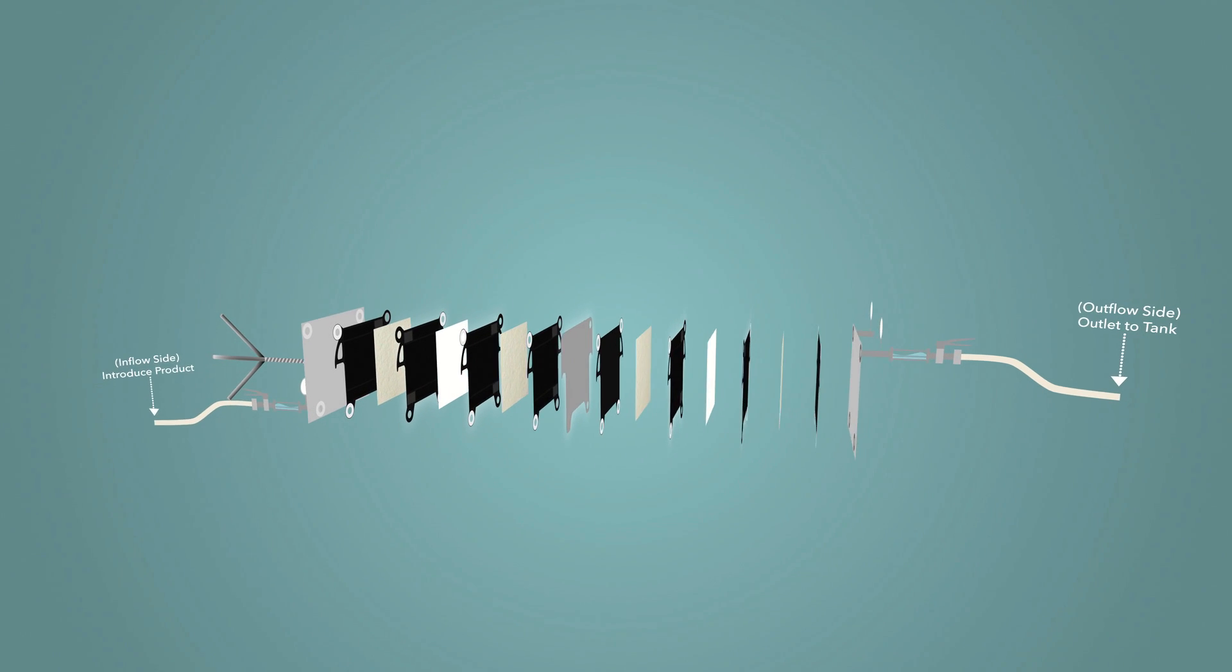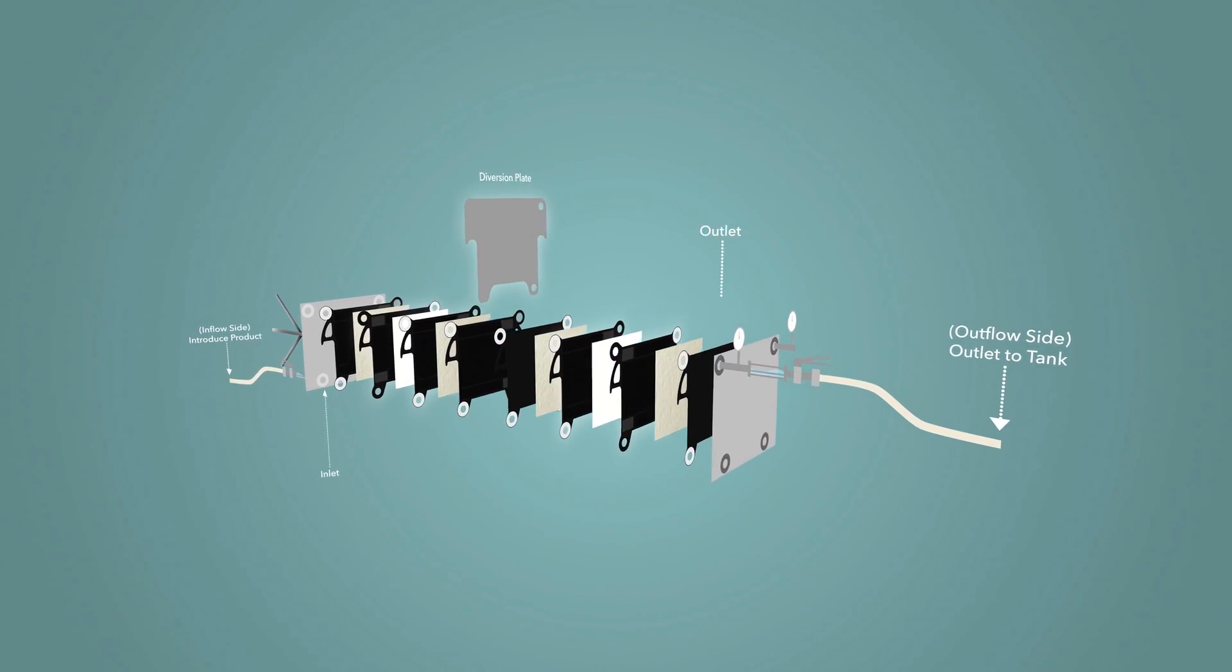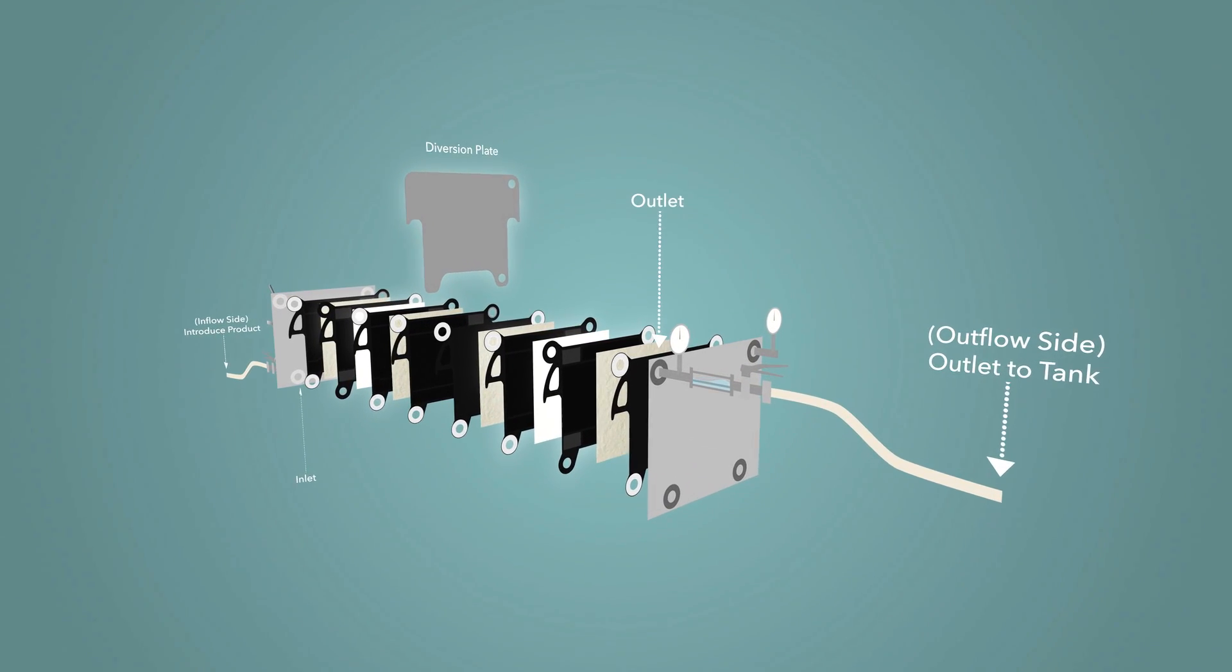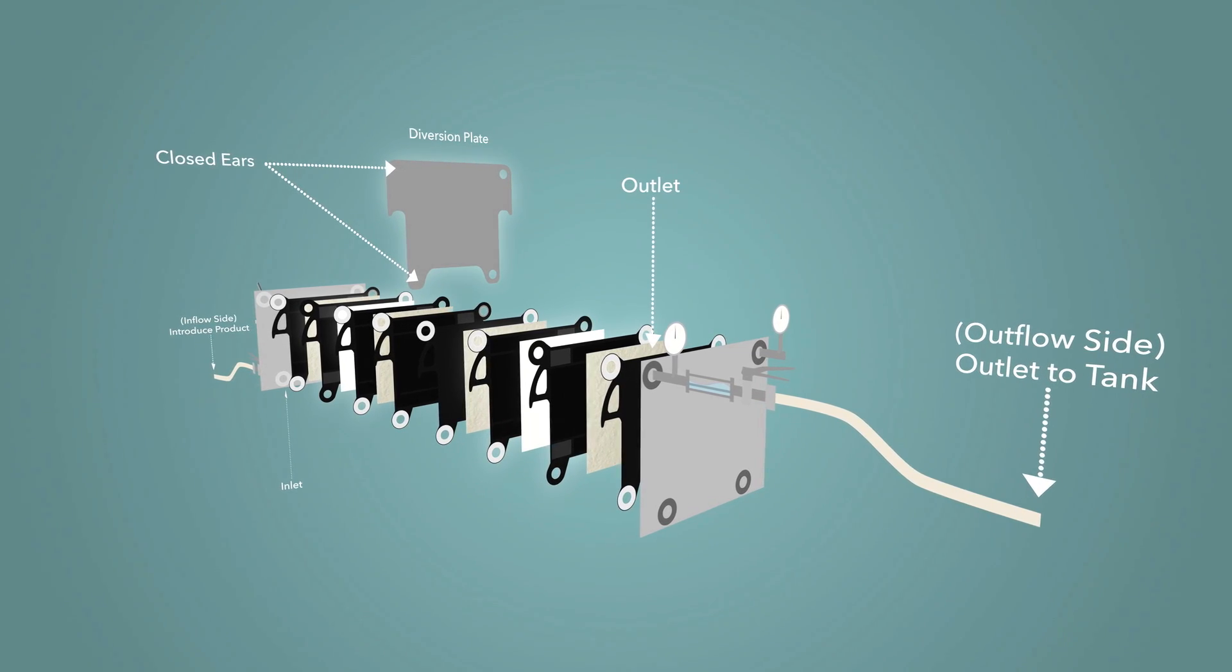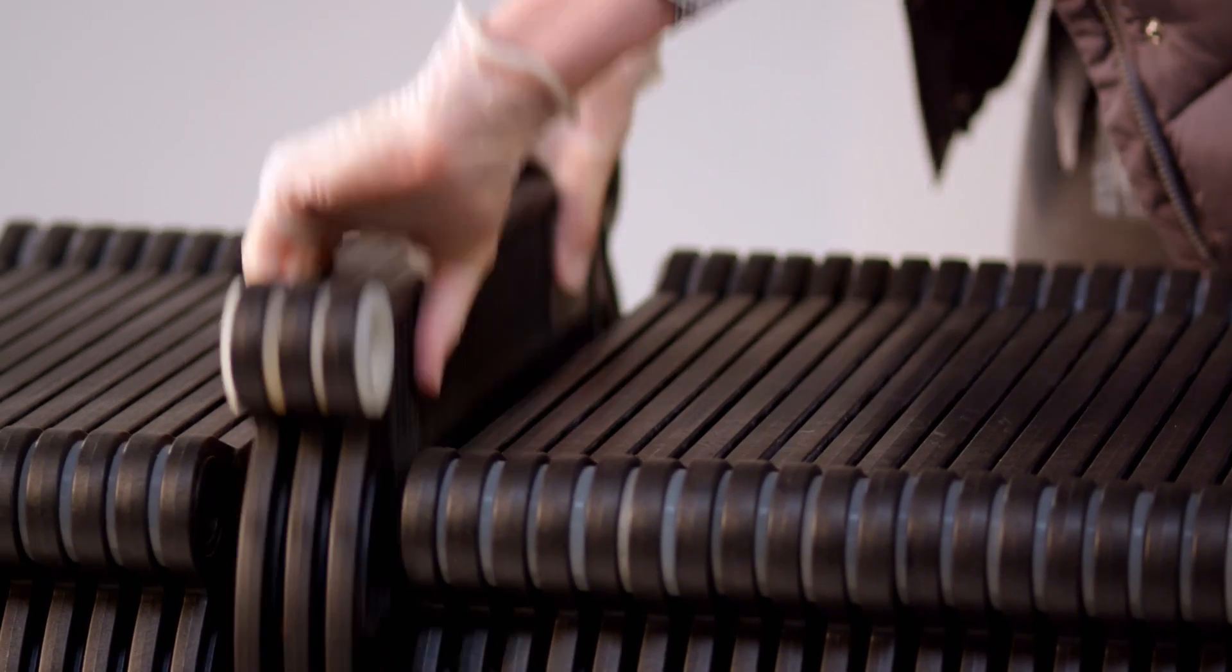If a diversion plate is not used, wine would simply enter through the inlet and exit through the outlet without filtering. Thus, when inserting the diversion plate, the closed ears must be placed on the inlet and outlet side of the filter. A diversion plate can be placed anywhere within the filtration pack.